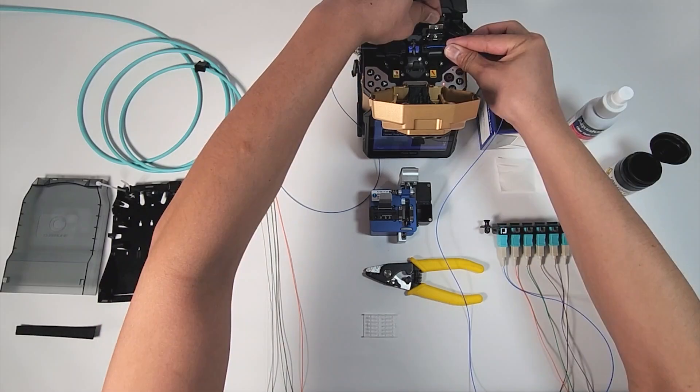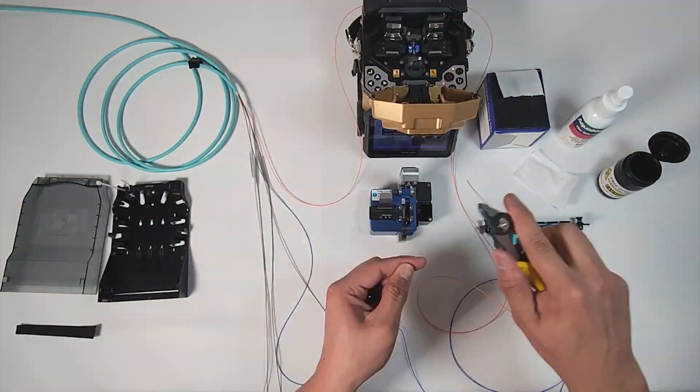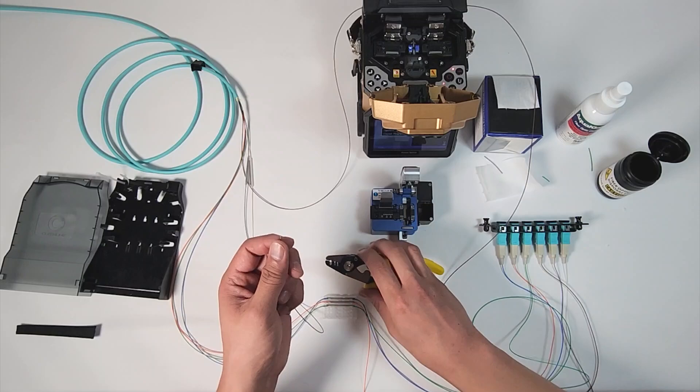Now, prepare, cleave, and complete fusion splice of all fibers and install splice protector sleeves onto splice tray.